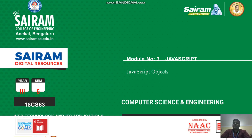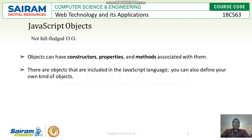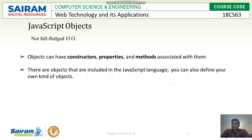Let us start with the JavaScript objects. As discussed, objects will be defined and used in programs. JavaScript objects are not full-fledged object-oriented language concepts. Objects can have constructors, properties, and methods. There are objects included in the JavaScript language, and you can also define your own.